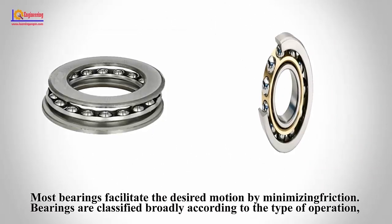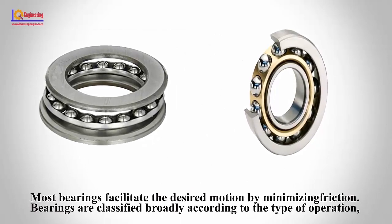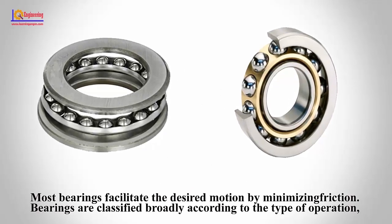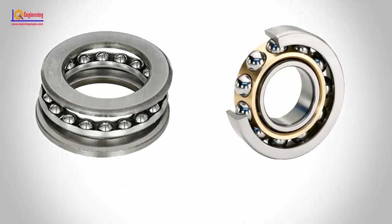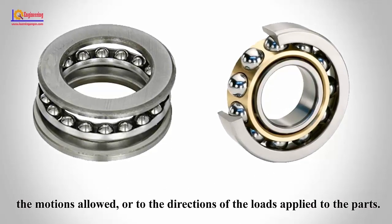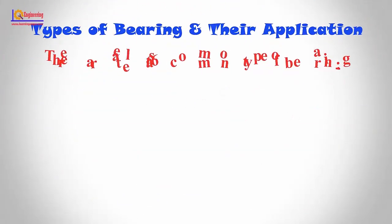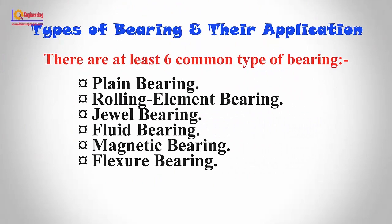Most bearings facilitate the desired motion by minimizing friction. Bearings are classified broadly according to the type of operation, the motions allowed, or to the directions of the loads applied to the parts. In this video, I will show you different types of bearing and their application. There are at least six common types of bearing, each of which operates on different principles.